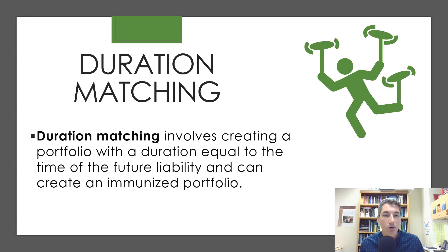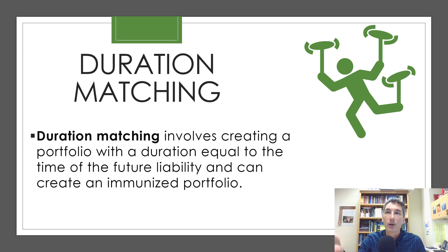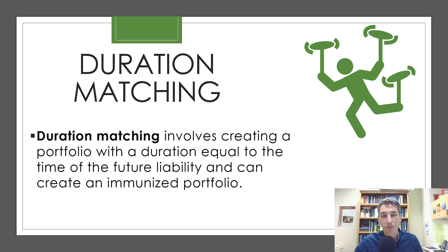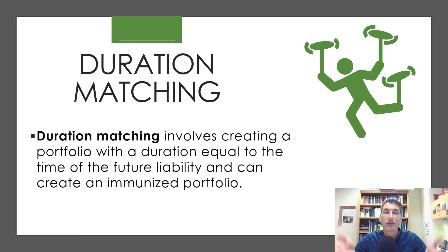Duration matching involves creating a portfolio with a duration equal to the time of the future liability. You have assets paying in and liabilities getting paid out. You can look at the Macaulay duration of your assets and purchase assets such that the Macaulay duration equals the time when you have to pay out. If you do that, it will create an immunized portfolio, because the Macaulay duration being equal to the time the liabilities are owed means that changing interest rates would affect them both equally, so you wouldn't have an imbalance.